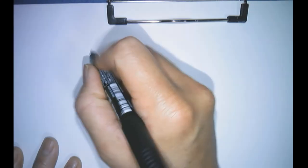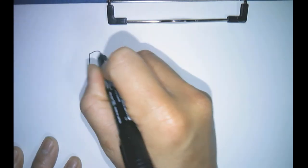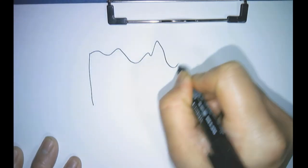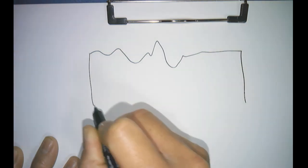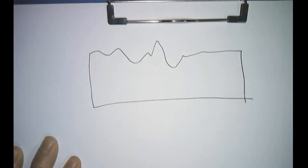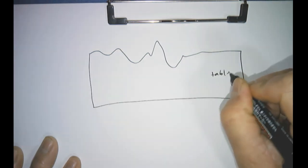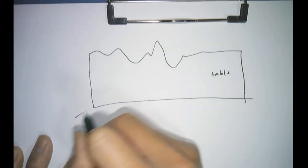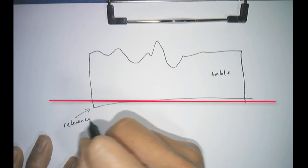So, to illustrate this point, let's draw a representation of the table. The next thing we need to do is set a reference point that we're going to measure from. Say we set the bottom edge of the table as our reference point, and that's our zero point, and we're going to measure the table's profile from that point.